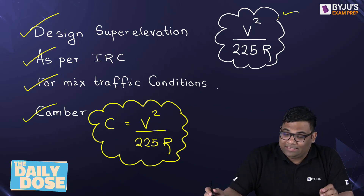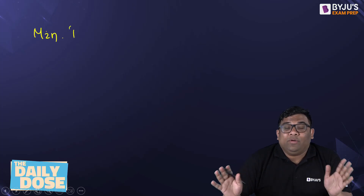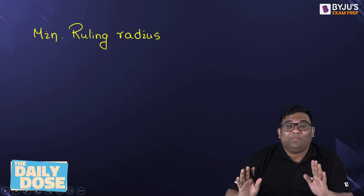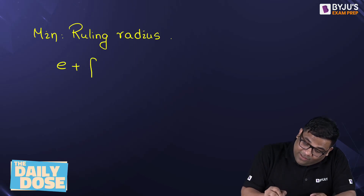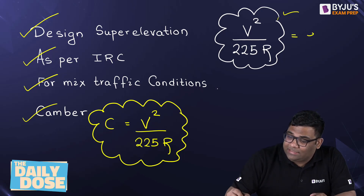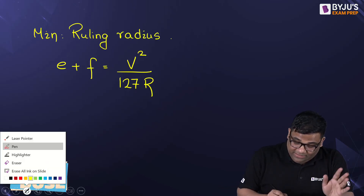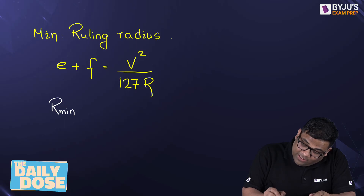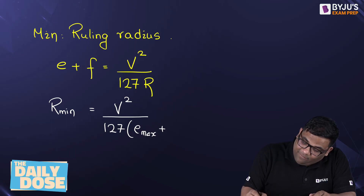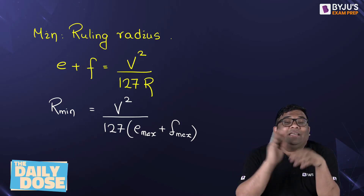Now, when will you use V square by 127R? If they ask you to find the minimum rolling radius, then E plus F equals V square by 127R. In the previous case, at least E equals V square by 225R, but here E plus F equals V square by 127R. So if you want to find the minimum radius, it will be V square by 127 times (E max plus F max).